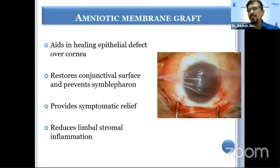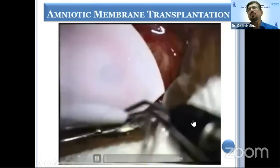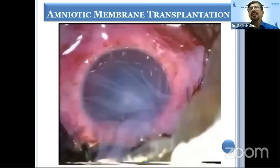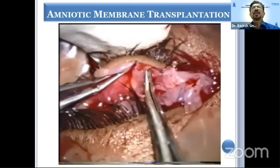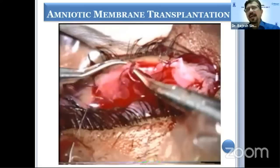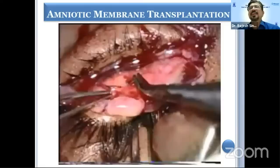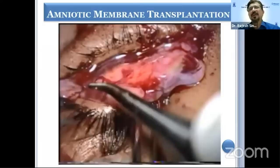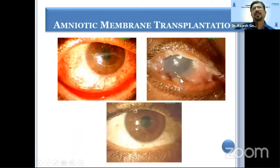Amniotic membrane has been found to be quite effective — it not only aids in epithelial defect healing, it provides symptomatic relief. A study at our center showed amniotic membrane is useful not only in improving epithelialization in cases of chemical injury, but also reduces inflammation and pain. Amniotic membrane transplantation done between 10 to 14 days after the injury improved epithelialization, reduced pain and symptoms. Topical steroid can be used for 10 to 14 days; if inflammation is quite severe and the epithelium is not healing, you can use amniotic membrane and also put topical steroid for another week.